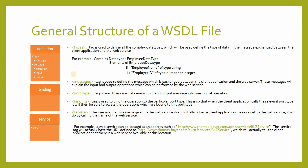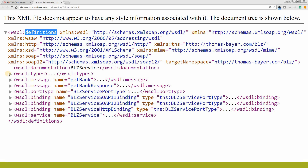Now I'll discuss what kind of information is contained in these tags. Let's start with the type tag. The type tag is used to define all the complex data types which will be used to define the type of data in the message exchange between the client application and the web service. You know about simple data types like string, integers, float values, etc. Complex data types are nothing but a data structure of these simple data types. For example, suppose there is a complex data type — the employee data type. It has two elements: employee name and employee ID. Employee name is of string type and employee ID is of integer type. Together they form a data structure, which then becomes a complex data type. So let's go back to the Wisdel file of the BLG service and see what is in the type tag.